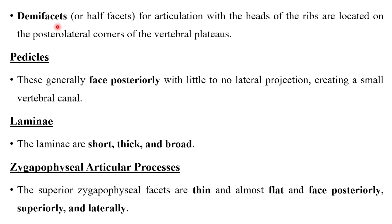There is a specific facet known as demi facets, otherwise known as half facets, for articulation with the heads of the ribs. These are located on the posterolateral corners of the vertebral plateaus and are present in the typical thoracic vertebrae.